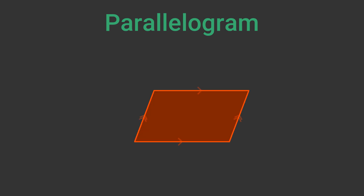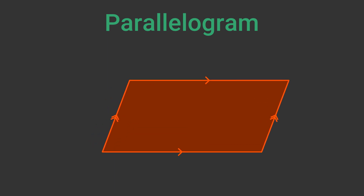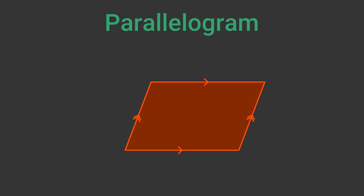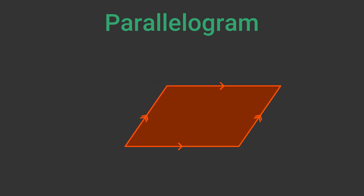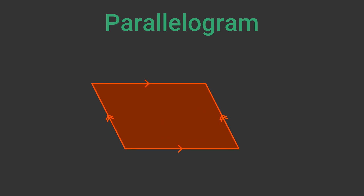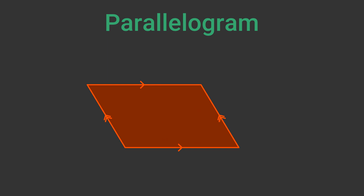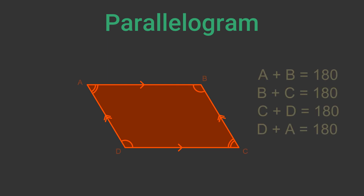A parallelogram is a quadrilateral in which the two pairs of opposite sides are parallel. It can be thought of as a pushed over rectangle. Like a rectangle, it can have any width and height, but a parallelogram can also have any angle of slope. The two pairs of opposite sides have equal lengths, and the two pairs of opposite angles are also equal. Any two adjacent angles add up to 180 degrees. The two diagonals bisect each other but they don't form a right angle.